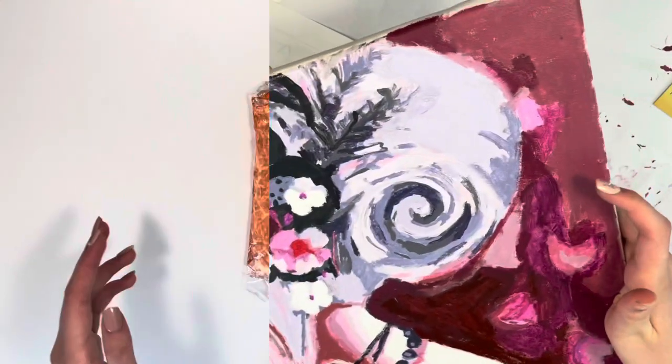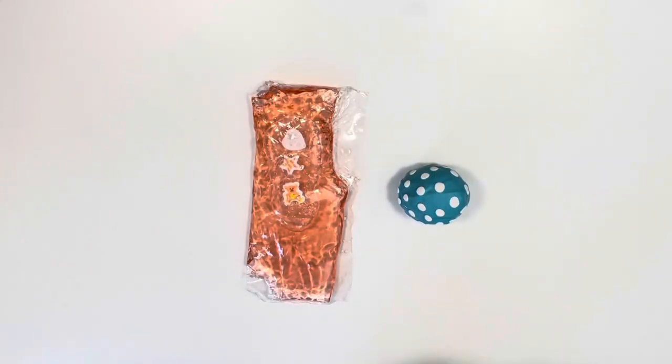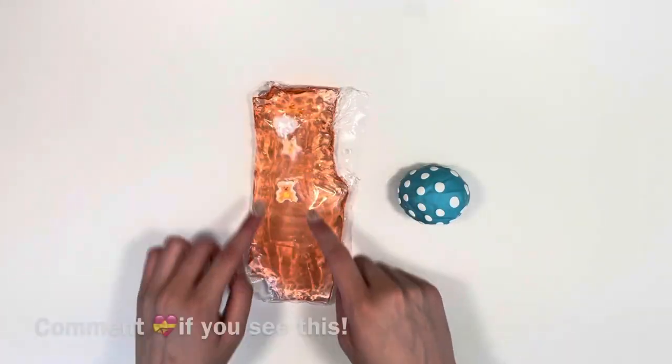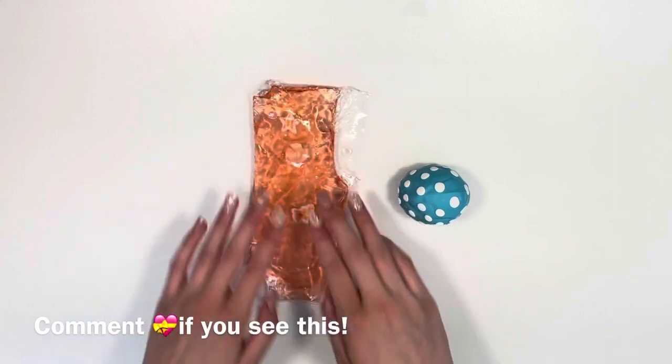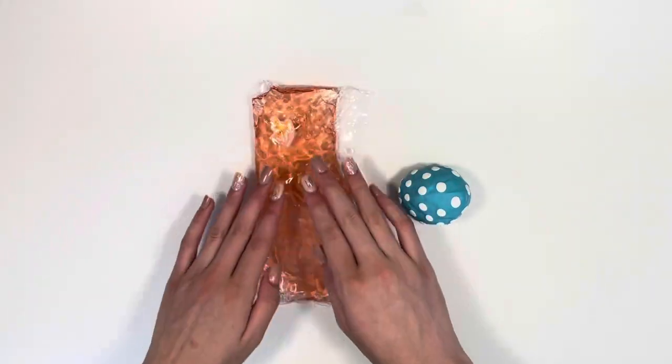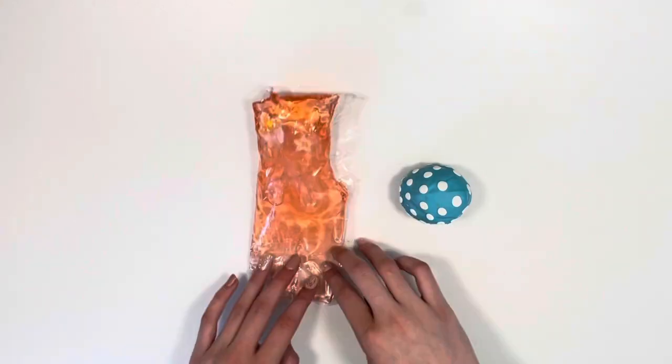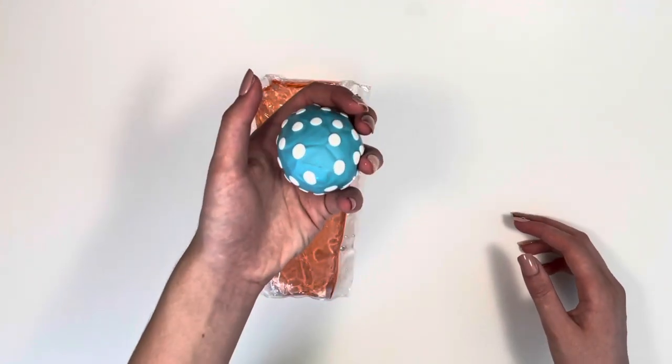So right over here were the fidgets we made today. Right here we have the water snake. I love the cute charms inside, and then right here we have the stress ball.